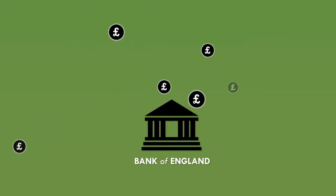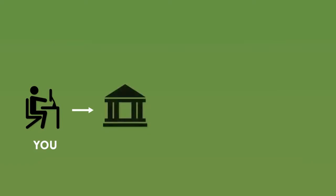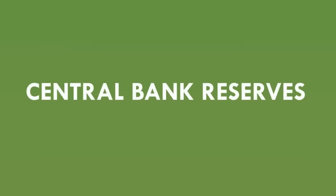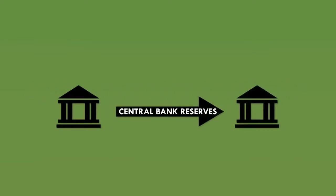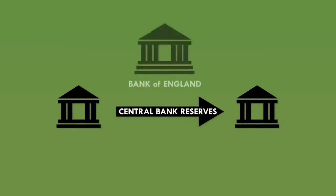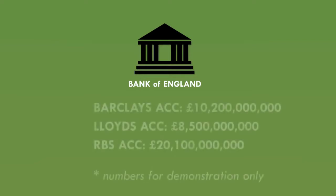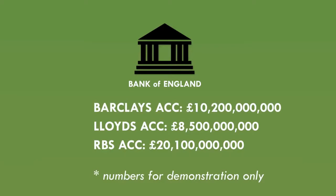If you try to make your own at home, pretty soon you'll get the police kicking down your door at two in the morning. Now imagine that you need to pay your rent and your landlord has an account with a different bank to you. When you log into your internet banking and make the payment, your bank has to send some money to your landlord's bank to settle the transaction. Banks don't want to make these payments in physical cash — carrying all this money around is dangerous. So instead they use a type of electronic money called central bank reserves.